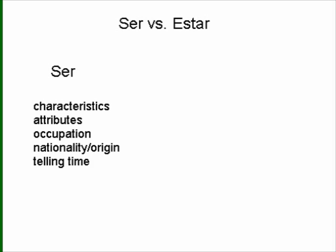Just a few examples of these things. Characteristics might be things like so-and-so is friendly or easy to get along with. An attribute might be a physical description — tall, pretty, blonde, redheaded, things like that.